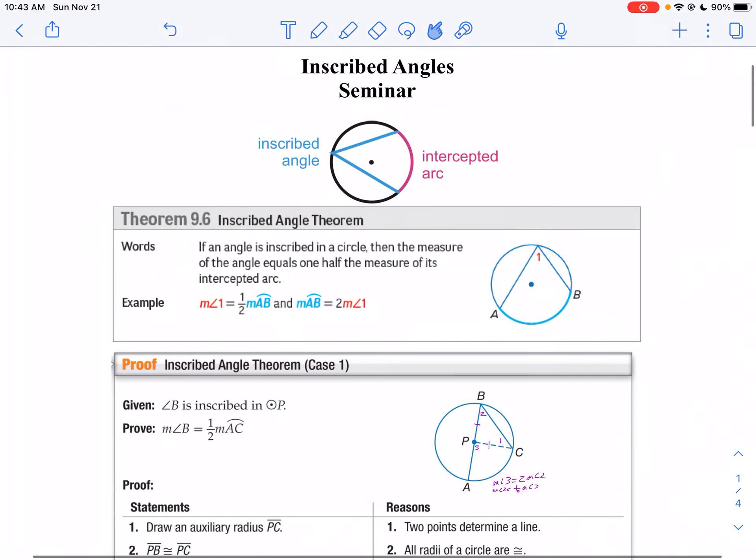So there's our proof. The inscribed angle is half of the arc it passes through. Or the arc is twice as big as the inscribed angle.